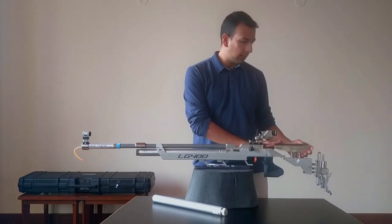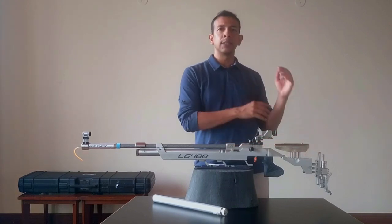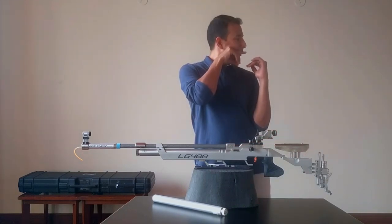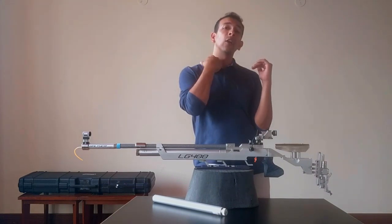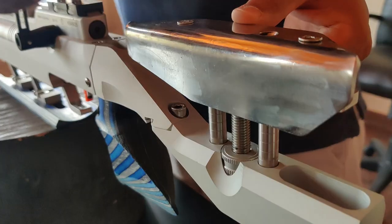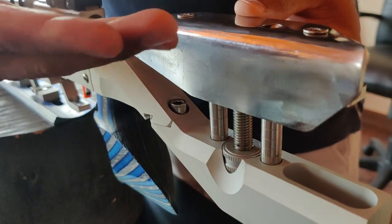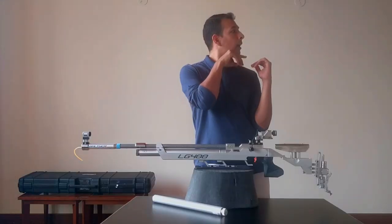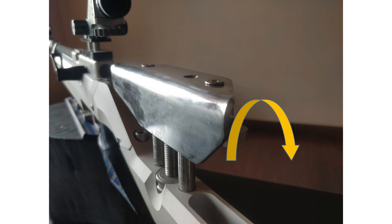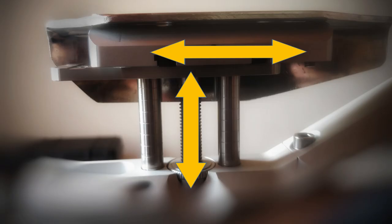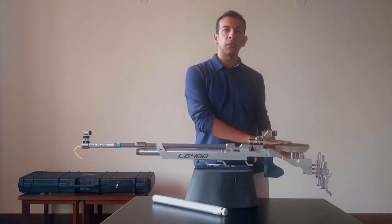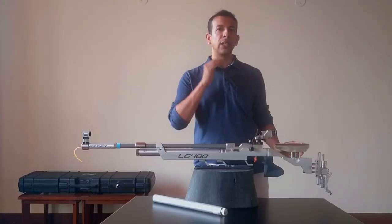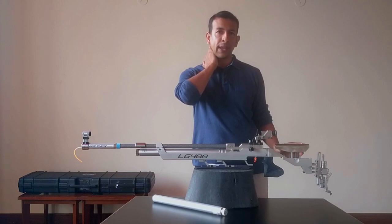From the grip, we move to the cheek piece. The cheek piece is meant to place my cheek. And depending on how long my neck is, I can move it up or down. Depending on what angle I want to place my cheek, I can move this in different angles. I can move it front and back.